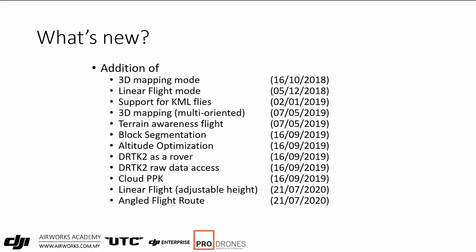Terrain awareness flight lets you set a height above ground — say 100 meters — and the drone will maintain that height above your terrain data. Altitude optimization uses 2D mapping but adds some oblique images to correct for elevation error. A key feature is having the DRTK2 work as a rover, which reduces the tools you need to carry into the field. It also gives you access to raw satellite data stored in bin files in the DRTK2, which you can access by plugging it into your PC like a USB drive.